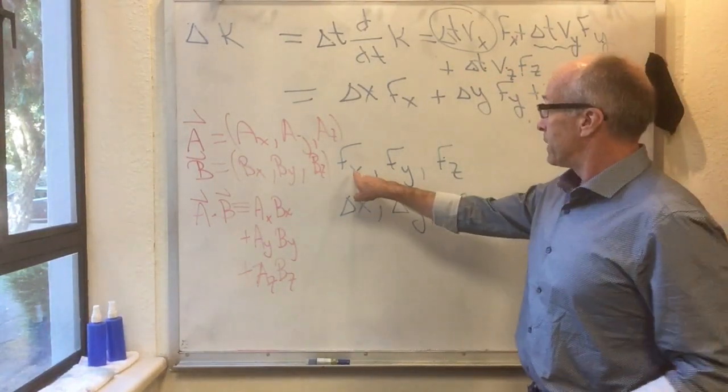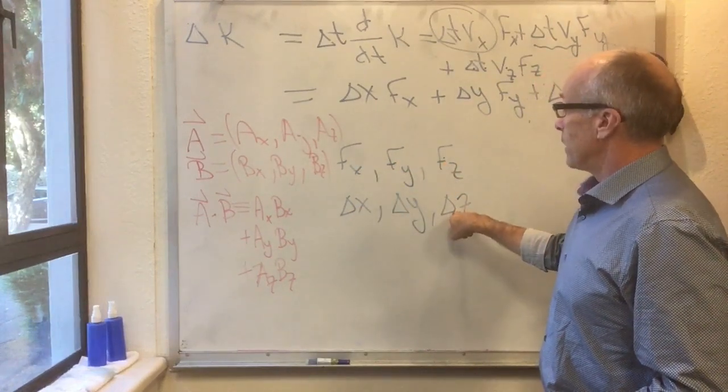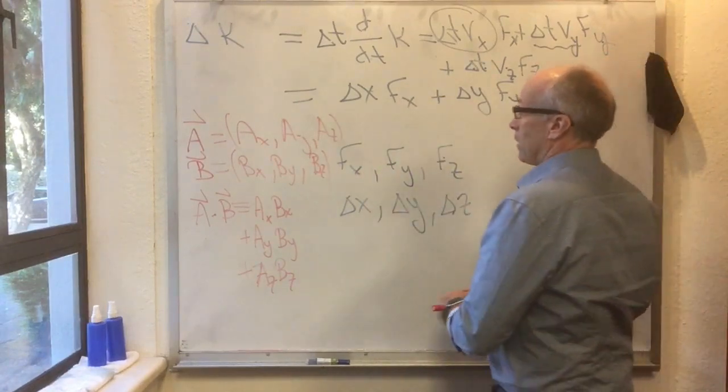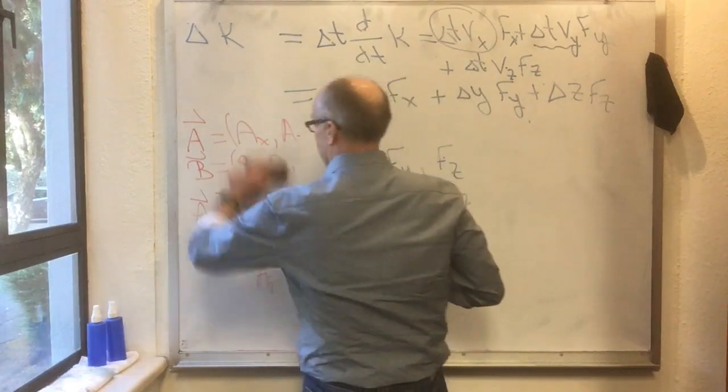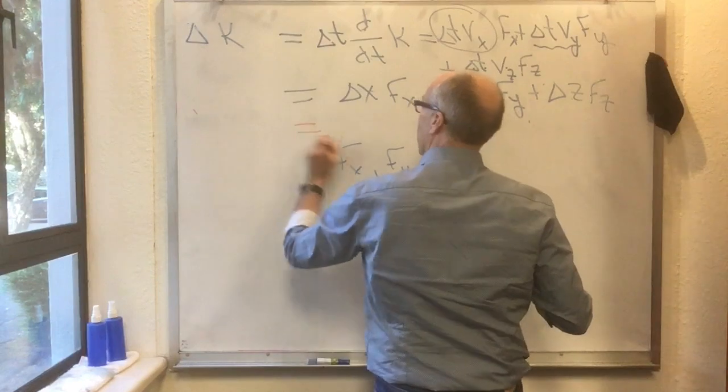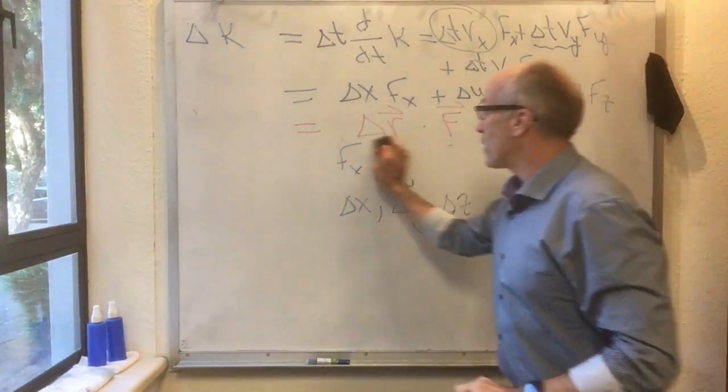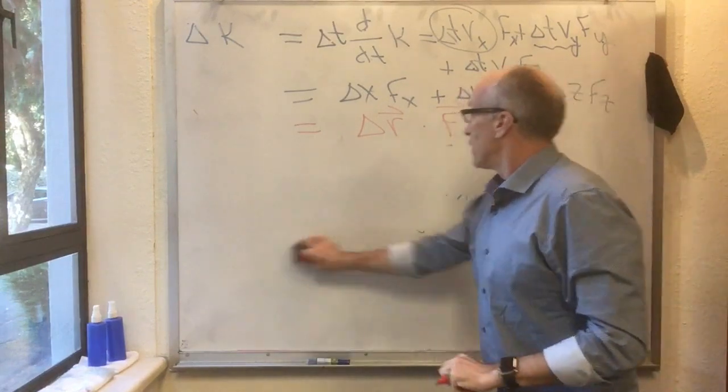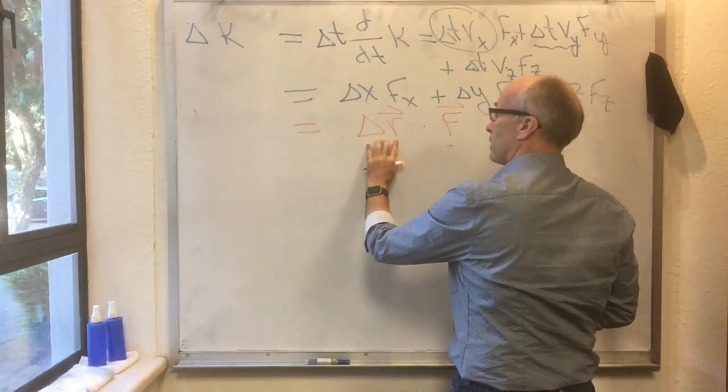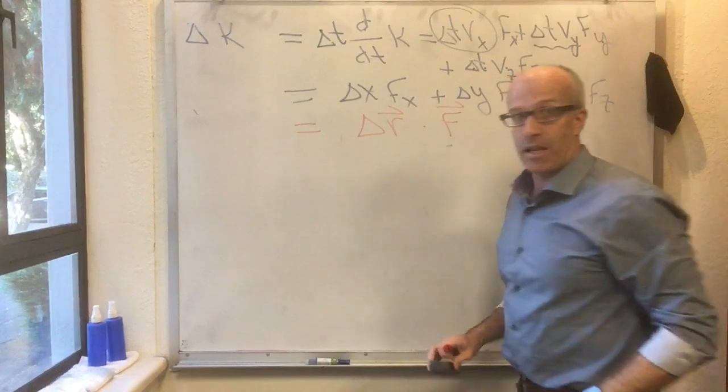Well, this is fx delta x plus fy delta y plus fz delta z, which is the dot product of f and delta r according to this new thing. So this entire thing here is actually equal to delta r dot f. We have just shown that you take the force, take its dot product with delta r, the displacement, and you get the change in this thing that I call k.